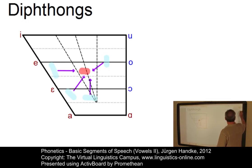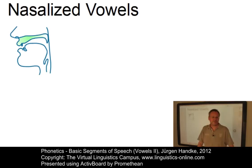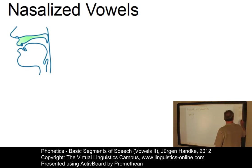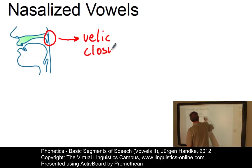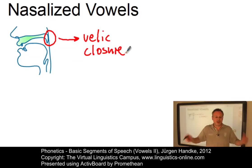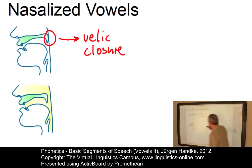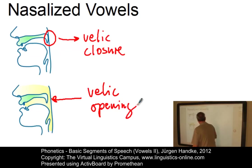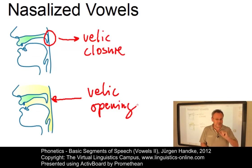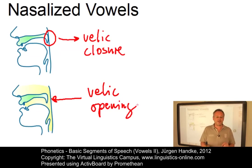Let's now look at another possibility of classifying vowels: nasalization. Normally in all vowels the velum is closed and we have velic closure, so the air does not flow out through the nose. However, if the velum is lowered, we have a velic opening, and part of the airstream can fill the nasal cavity — it never escapes through it but uses the nasal cavity as a second resonance chamber. This effect is referred to as nasalization.